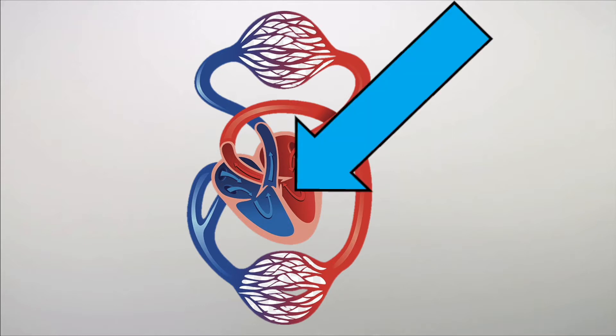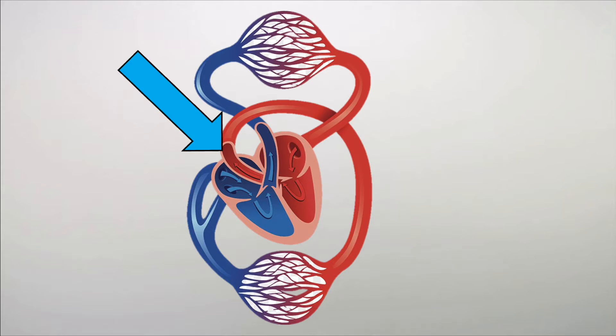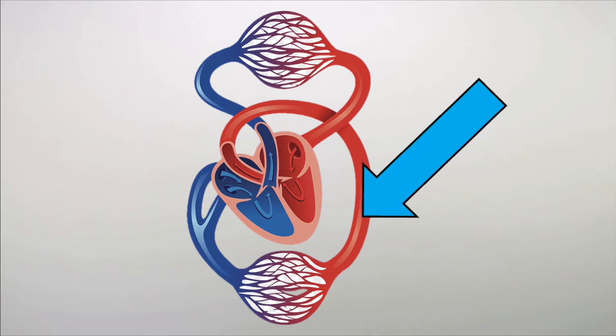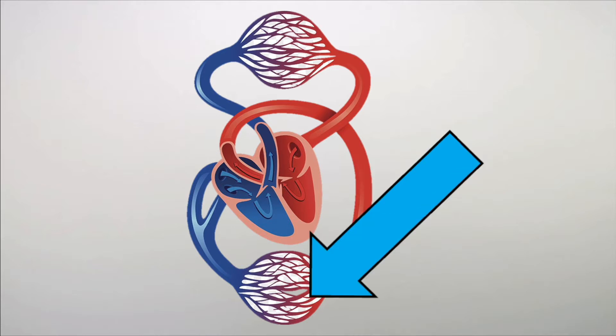This here is the heart. Blood is pumped from the left side of the heart into arteries. Arteries transport blood away from the heart. These blood vessels represent capillaries surrounding tissue — a network of blood vessels that supply cells with oxygen and nutrients and take waste products away.